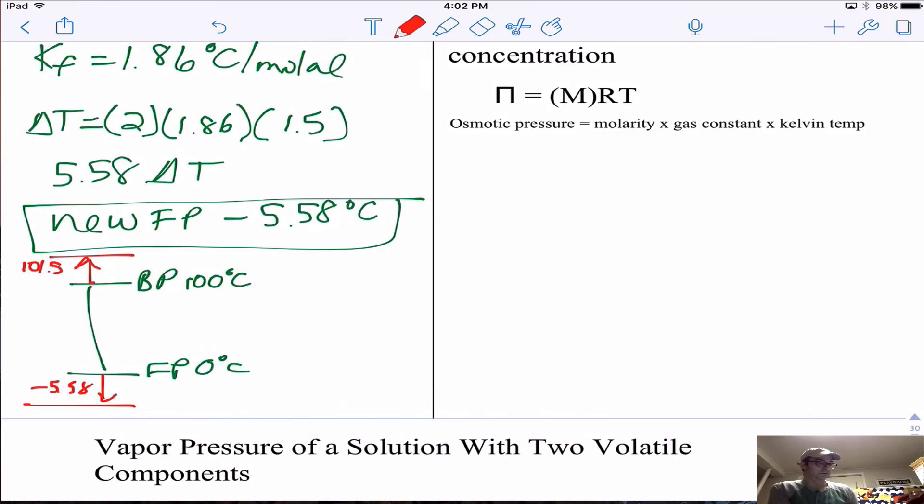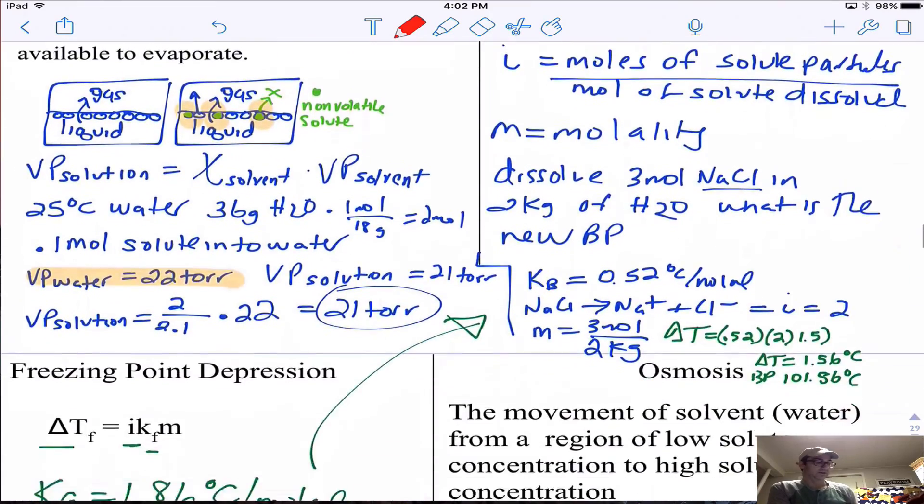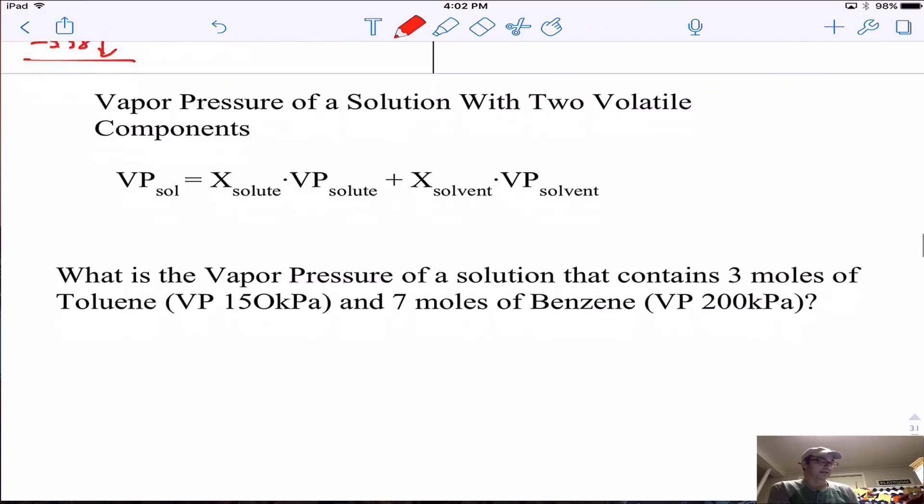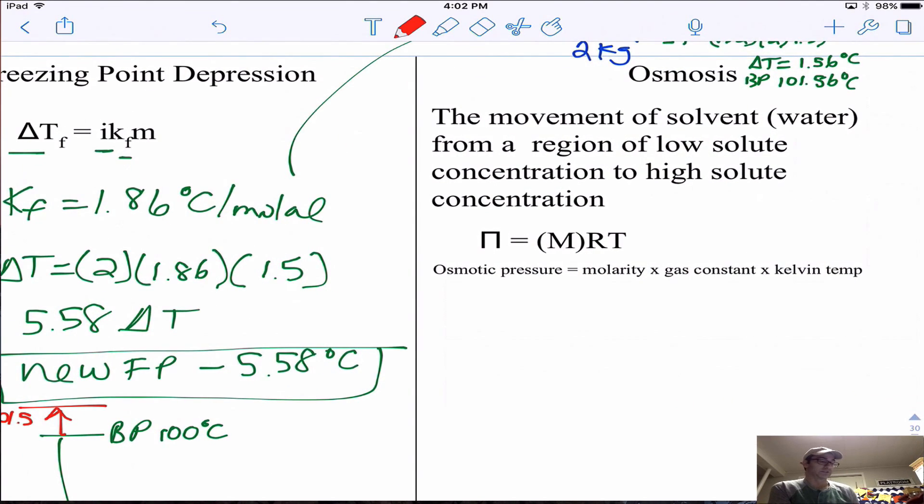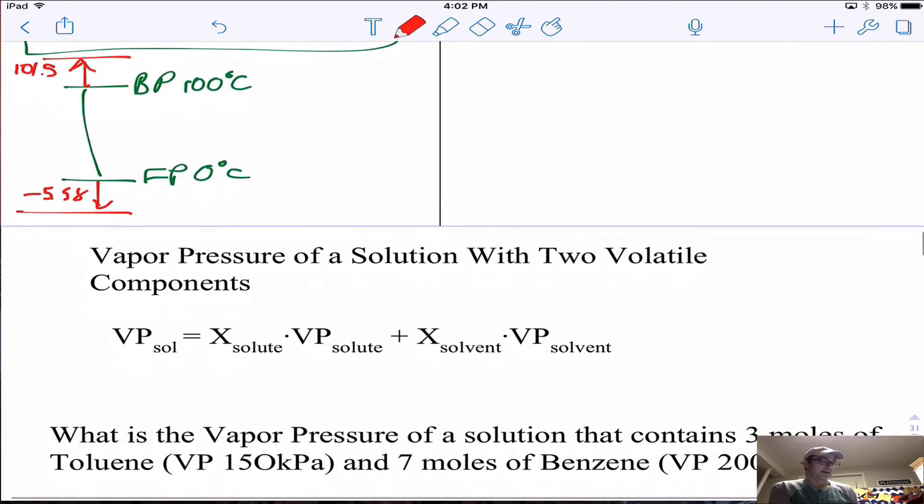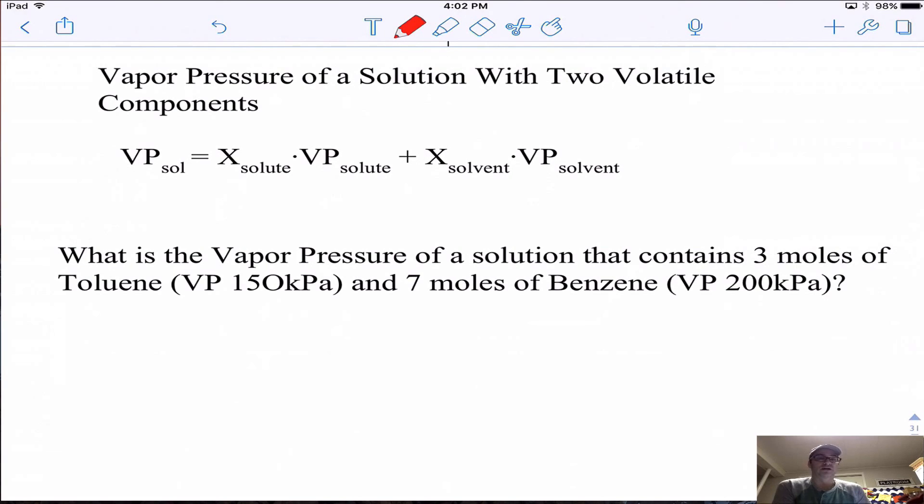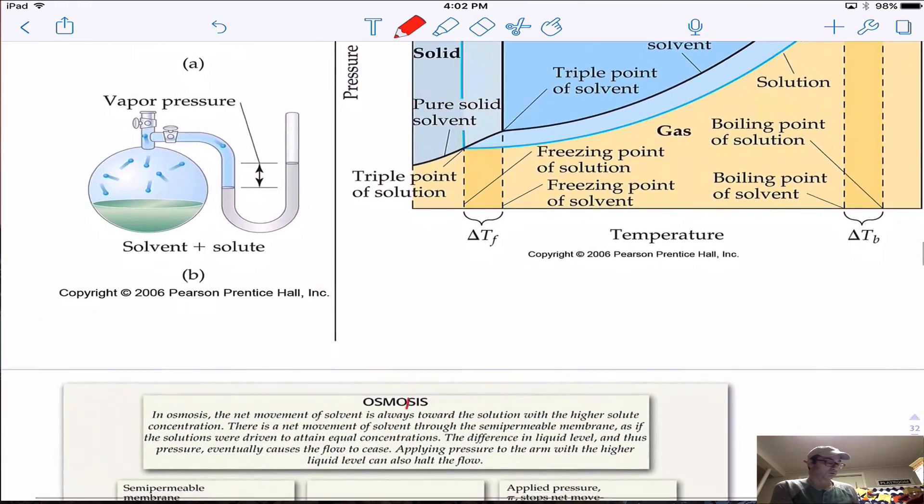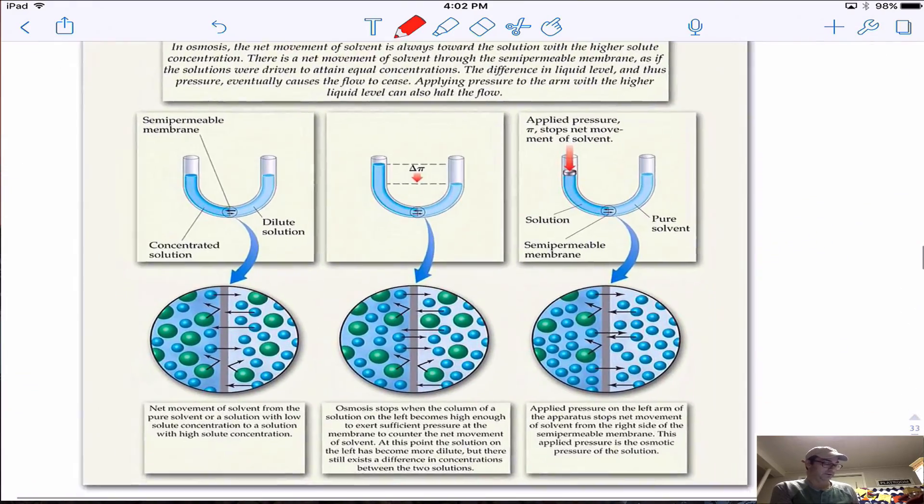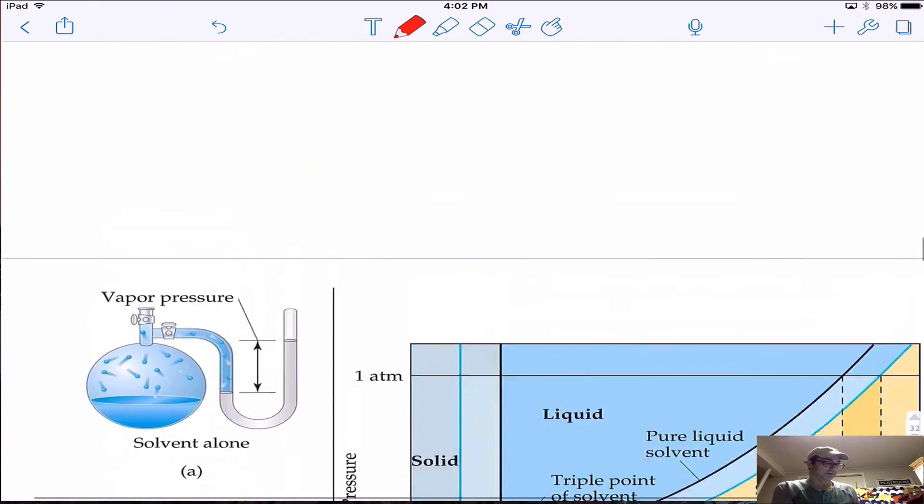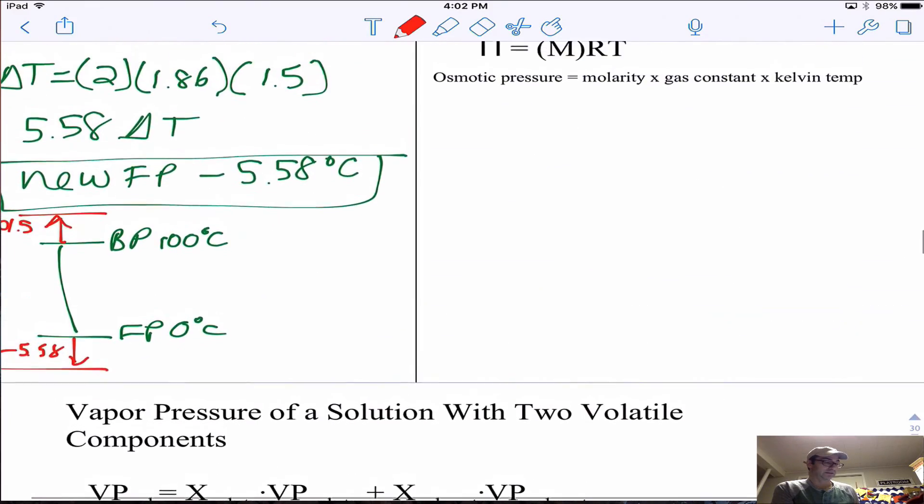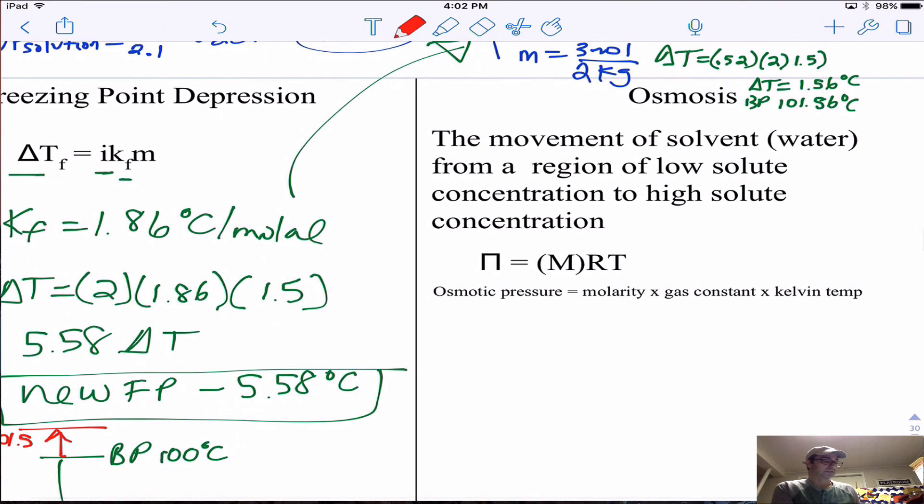These are the first two colligative properties. I'm going to stop here and then we'll talk about the next two. The next two: one is osmosis or osmotic pressure, and the next is a more complicated vapor pressure calculation. We'll do some more practice. Thanks so much for watching; the next video will be kind of short but we'll also spend time going back through this.